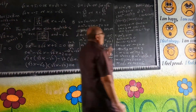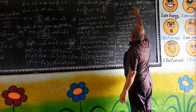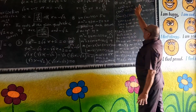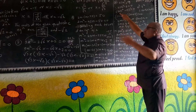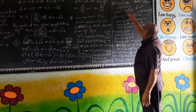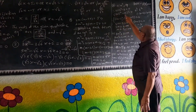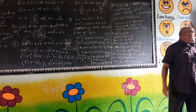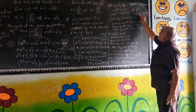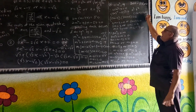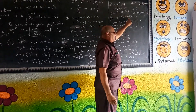Example number 10: 25m squared minus 9 equals 0. Since 25m squared equals 5m squared and 9 equals 3 squared, we use the identity a squared minus b squared equals a minus b into a plus b. Therefore 5m minus 3 into 5m plus 3 equals 0.